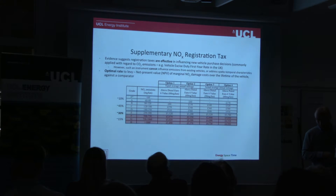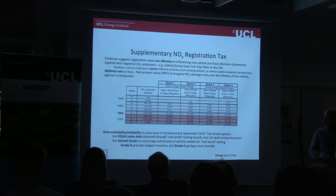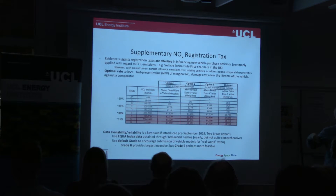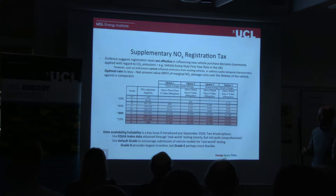If we were to implement such a tax, the average diesel car sold today would have a tax imposed of roughly £1,100 to about £1,700 depending on the option. The problem comes if this is to be introduced prior to the introduction of real-world emissions testing in 2019. If introduced before that, there are a couple of options to determine the grading for each individual car: first, to use the EQUA index data, though that data is nearly but not quite comprehensive and is produced by one firm using one methodology, so it could be open to contest.